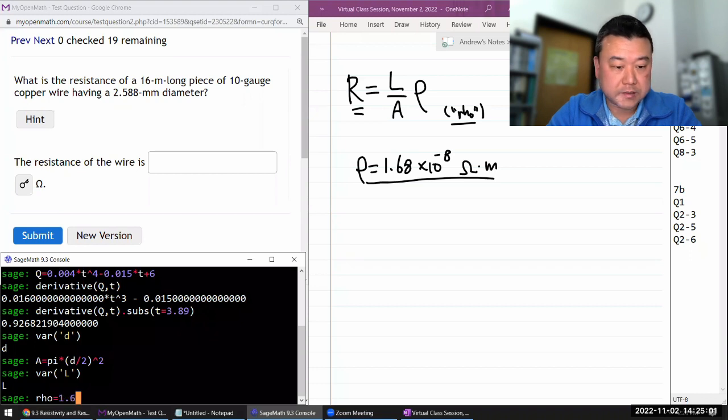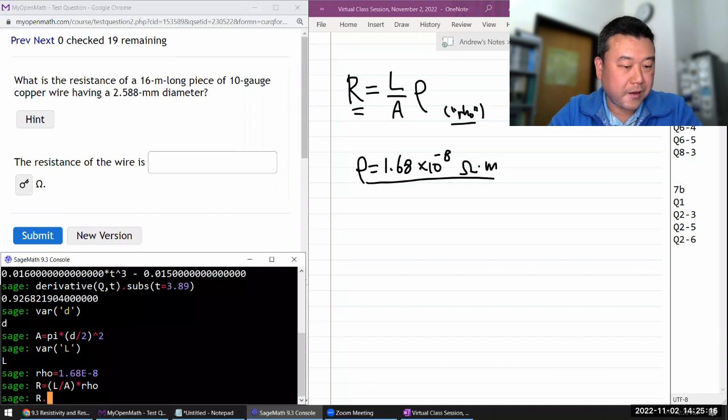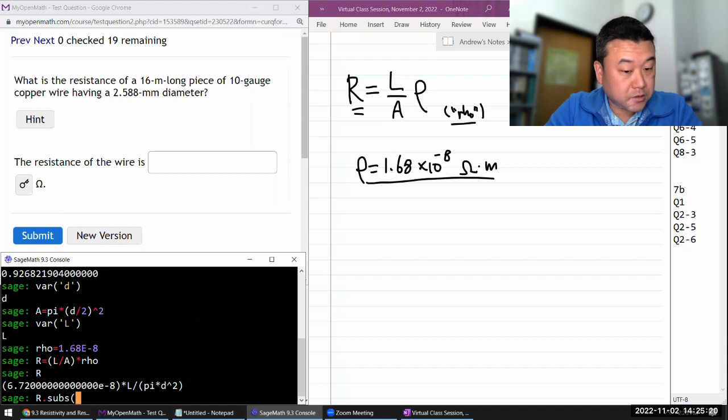Let me just define the variable L so I can use it in my expression. And define rho as 1.68 times 10 to the power of minus 8. Okay, so I can say my resistance R is equal to length divided by area times rho. And if I just look at the value of R, let me just plug in the numbers. I'm going to substitute in length of 16 meters. Pi, I think I can leave that alone. And diameter of, I'm going to convert from 2.588 millimeters to meters as I plug it in. So it'll be 2.588 times 10 to the power of minus 3 meters, conversion from millimeter to meters.